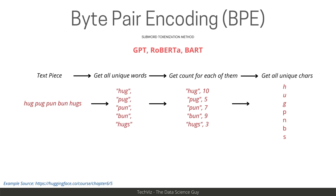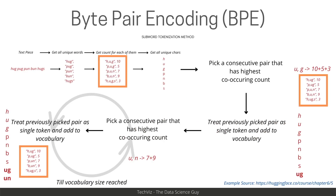Byte pair encoding is one such subword method used in models like GPT, RoBERTa, and BART. To apply it, you start with a text corpus, get all unique words and their counts, then tokenize them at character level to form the initial vocabulary. You then pick the consecutive pair of characters with the highest co-occurring count across words — for example, 'hug' appearing ten times, 'bug' five times, and 'hugs' three times. This highly co-occurring pair is then added to the vocabulary, keeping note of the merging process.